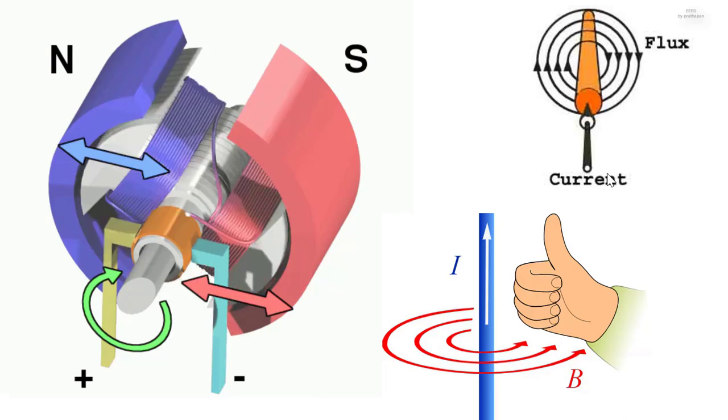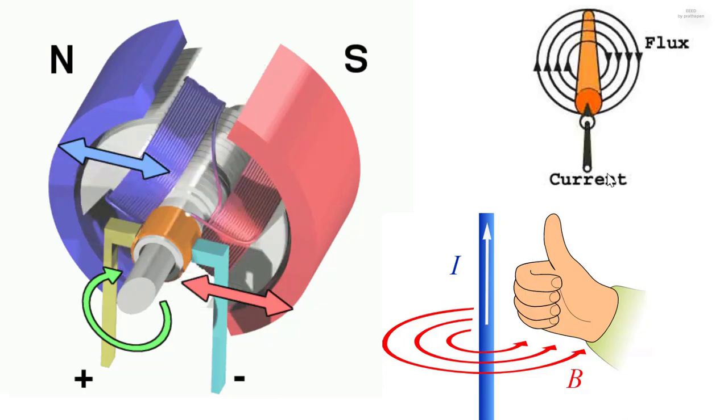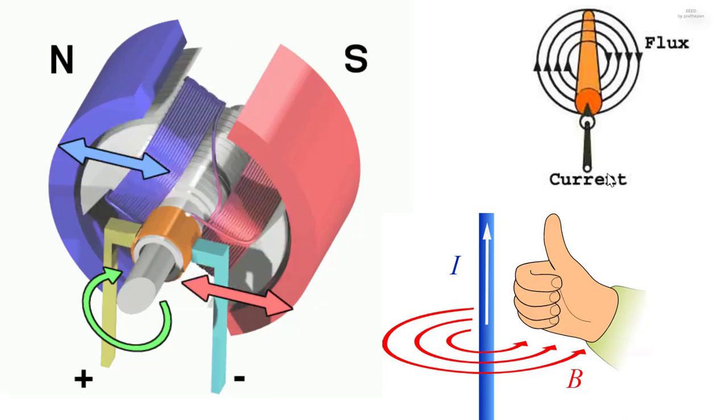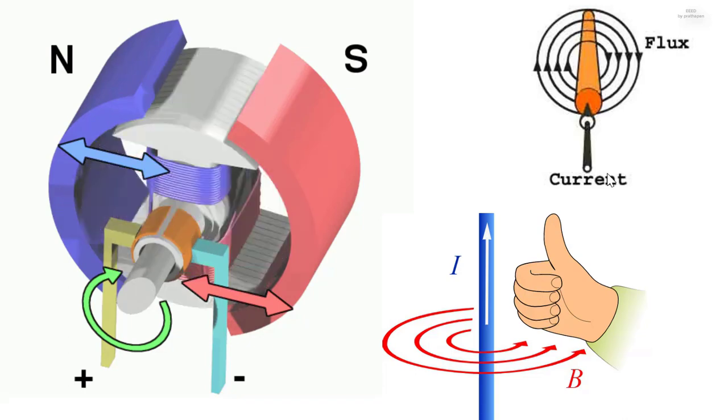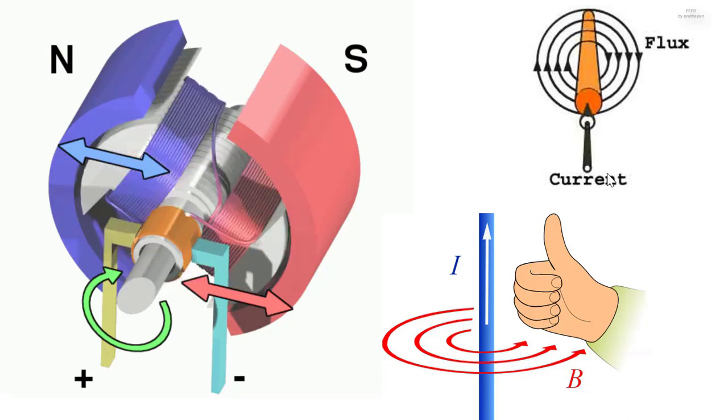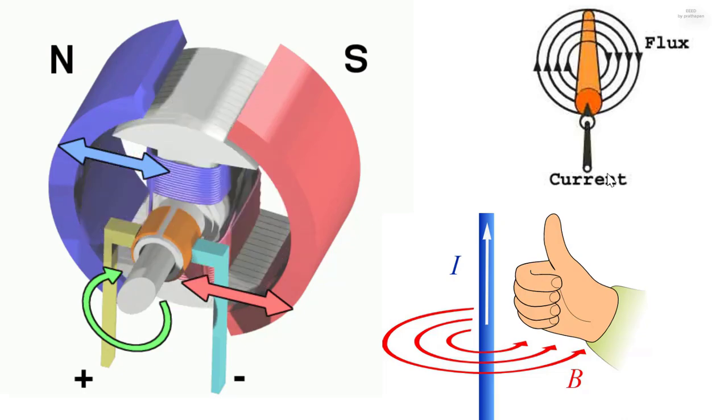The direction of the induced magnetic field is also sometimes remembered by the right-hand grip rule, as depicted in the illustration, with the thumb showing the direction of the conventional current and the fingers showing the direction of the magnetic field.